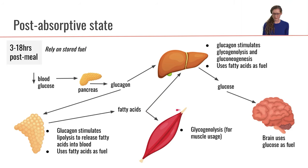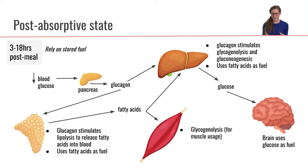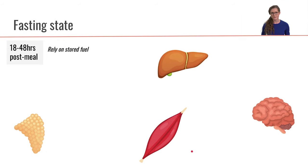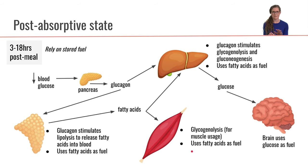Now, what's going on in the muscle? The muscle may be doing some glycogenolysis, but remember the muscle is pretty selfish with this glycogen. So if the muscle is performing glycogenolysis, then it's going to be using that glucose itself. Otherwise, the muscle will be using fatty acids as fuel. And that is the post-absorptive state — 3 to 18 hours post-meal.